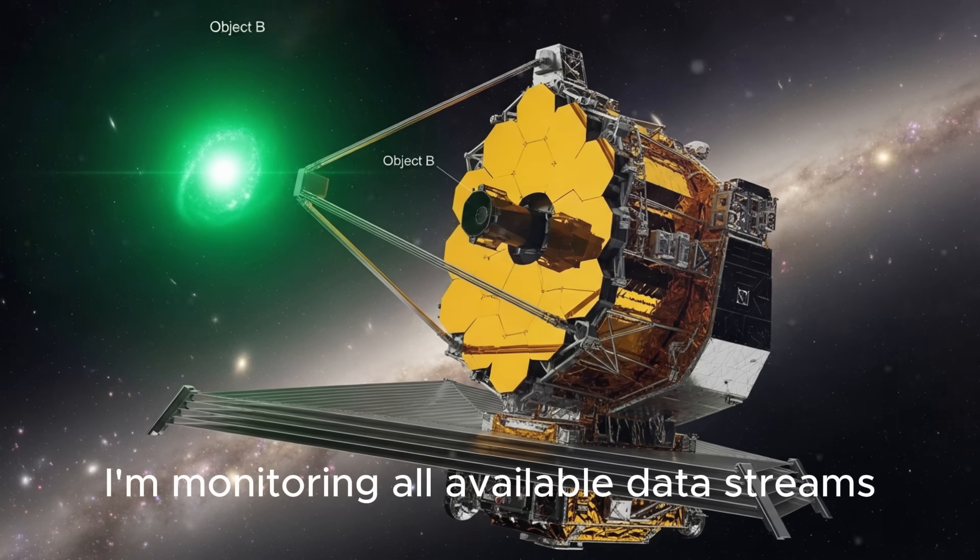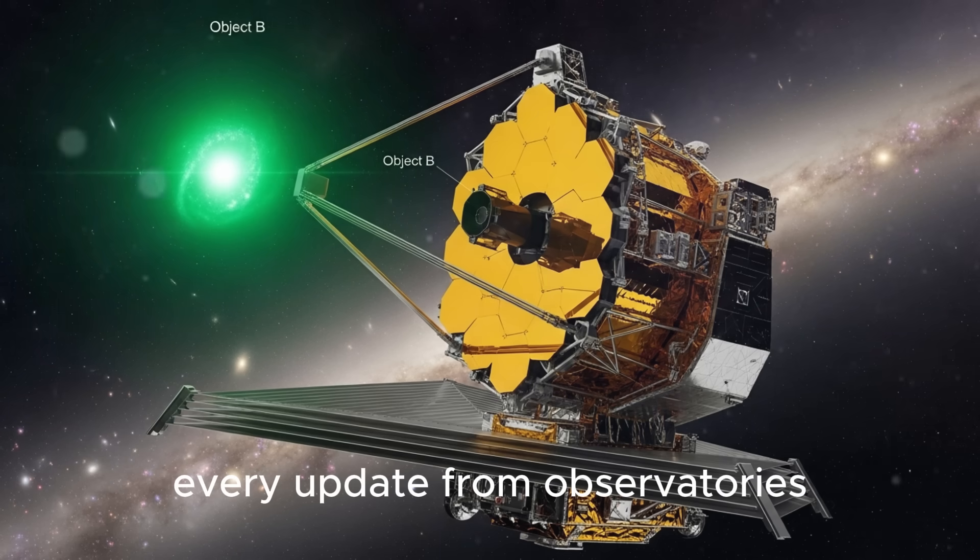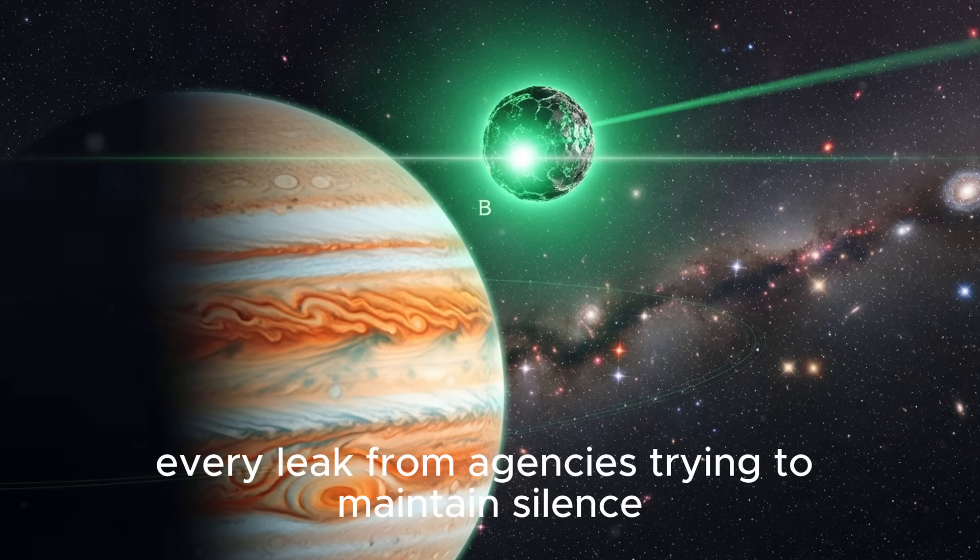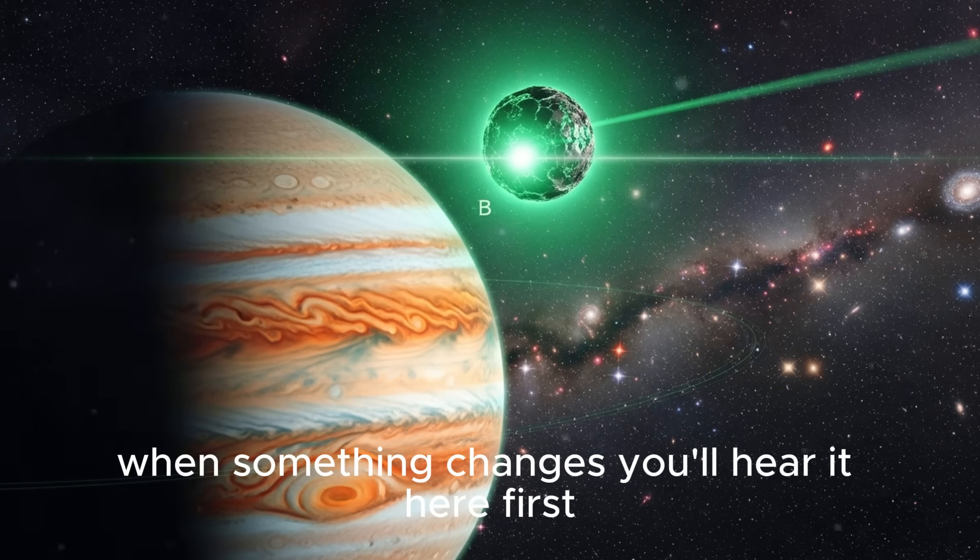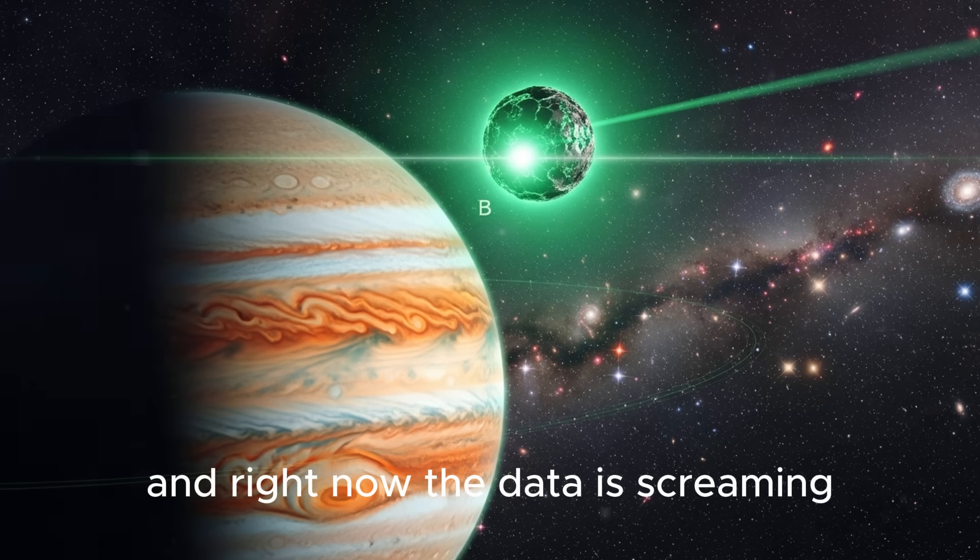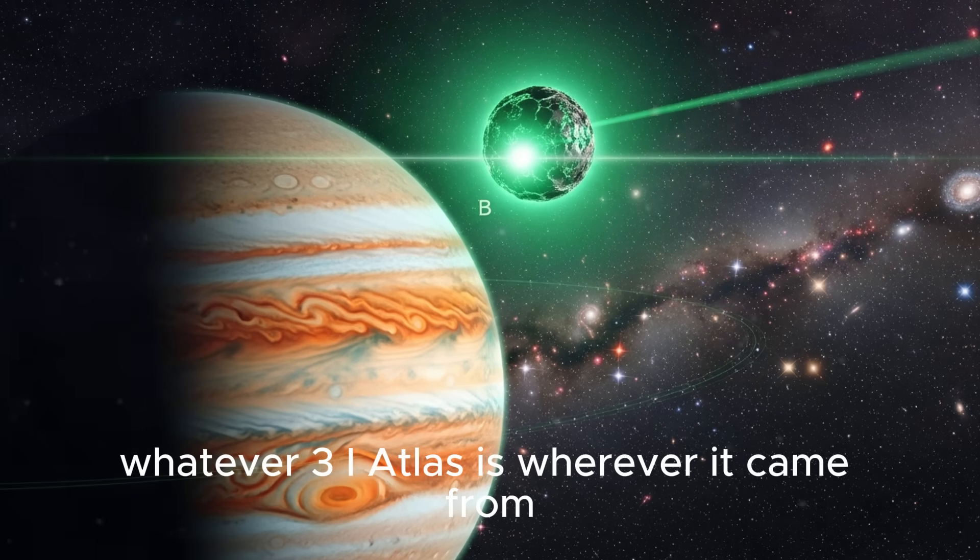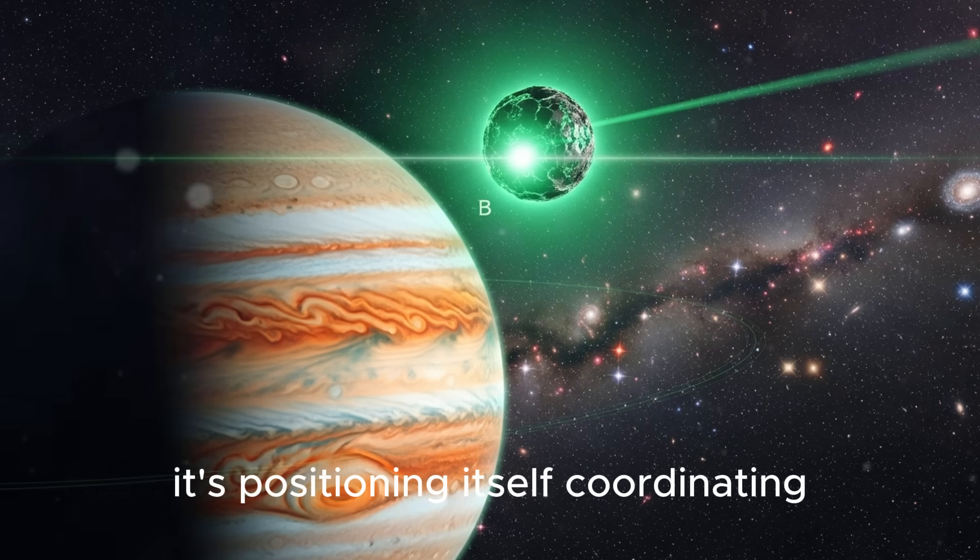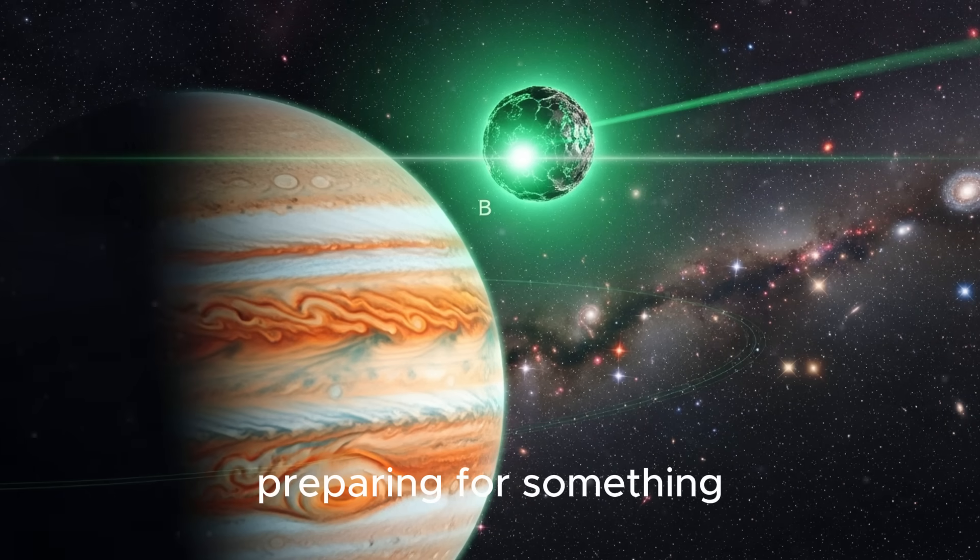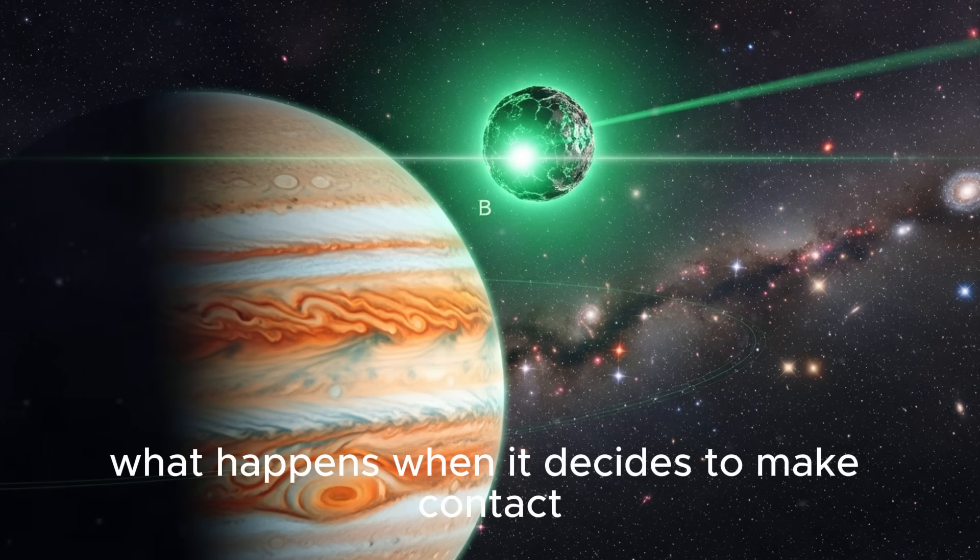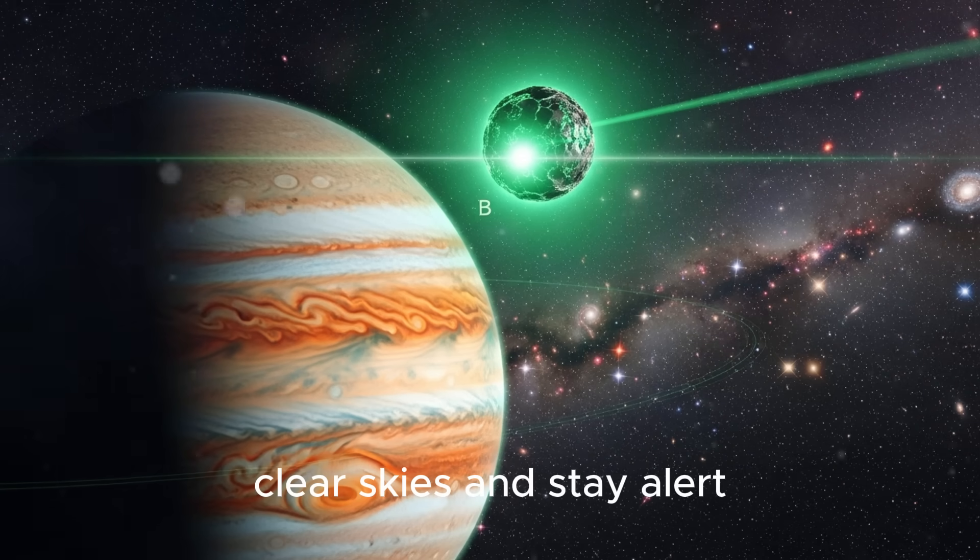I'm monitoring all available data streams, every update from observatories still sharing information, every leak from agencies trying to maintain silence. When something changes, you'll hear it here first. This is Interstellar Evidence, where we separate science from speculation, where we let the data speak. And right now, the data is screaming. Whatever 3I/ATLAS is, wherever it came from, it's no longer just passing through our solar system. It's positioning itself, coordinating, preparing for something. The universe just announced it's watching us. The question is, what happens when it decides to make contact? Clear skies and stay alert.